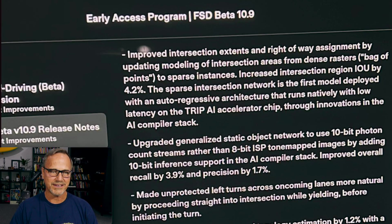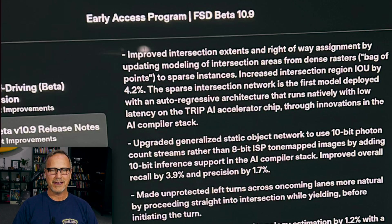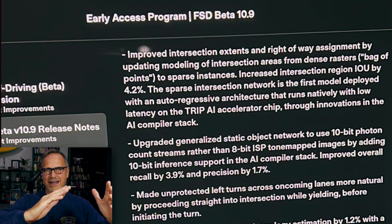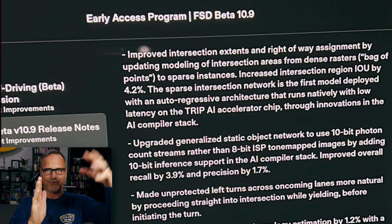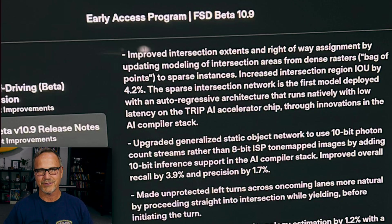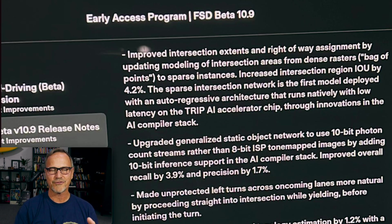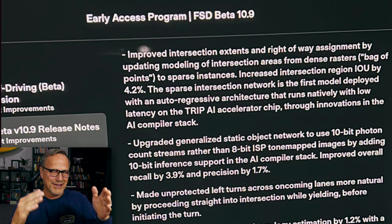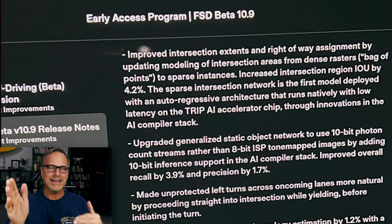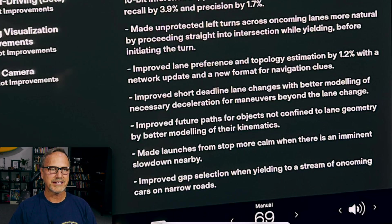Next: made unprotected left turns across oncoming lanes more natural by proceeding straight into the intersection while yielding before initiating the turn. If you've driven FSD beta, on big multi-lane roads the car would often start turning left and then get caught in an awkward angled position waiting for traffic. Now it should go straight into the intersection, wait for a gap, and then complete the left turn — much more the way human drivers actually handle this.